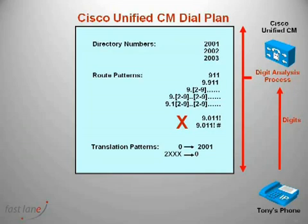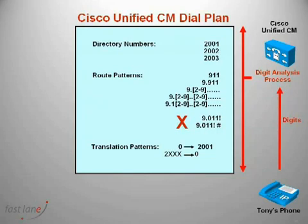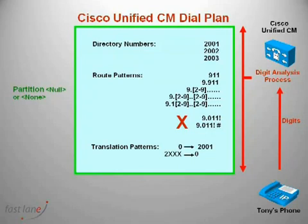To solve this problem, we will create what's called partitions. If I said I was going to partition your hard drive, I would mean I would be segmenting it up into possibly C drive, D drive and E drive. In the case of Communications Manager, when we create partitions, we're actually segmenting up the dial plan. The original dial plan is called the null or none partition. If you do not assign numbers to a specific partition, they're said to be in the null or none partition.